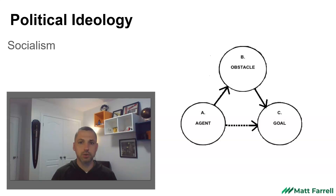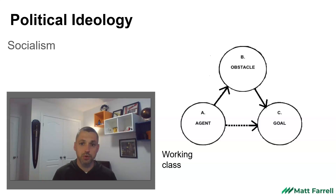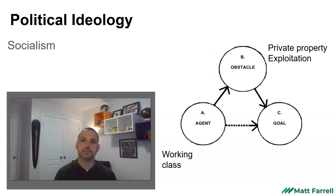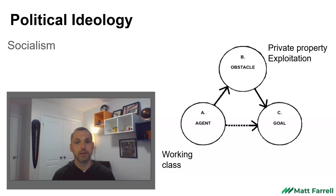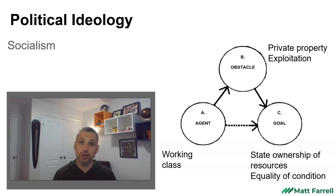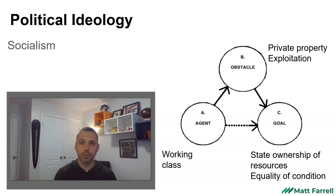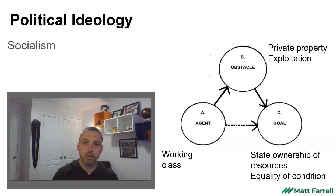One final ideology we can look at is socialism. Socialism is different in that it is a class-based ideology — the agent isn't an individual but an entire class, the working class. The challenge is private property: some people can own wealth, property, and capital, accumulate it, and exploit workers who have nothing to sell but their labor. Socialists want some form of state ownership of resources, nationalization of key industries, and equality of condition — there should not be very rich and very poor people; everybody should end up with roughly the same amount.